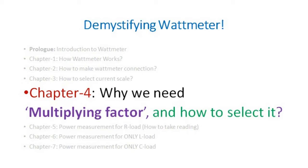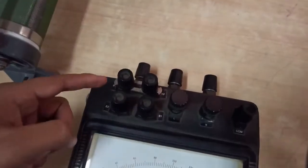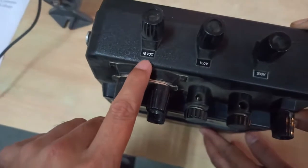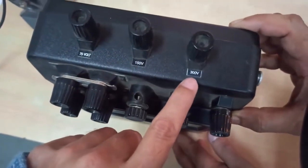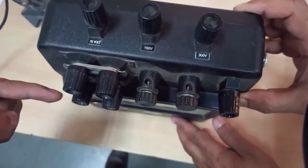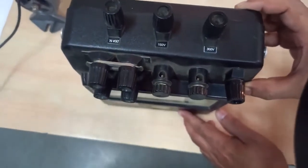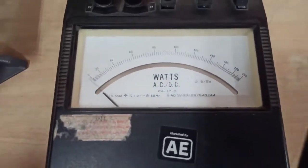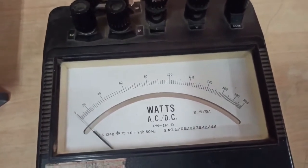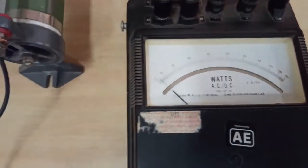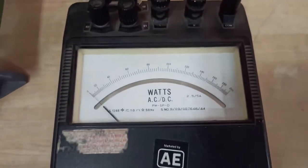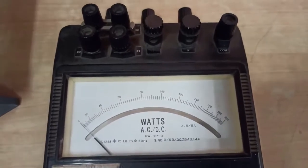For current, we have two scales, and for voltage, three scales: 75, 150, and 300 volts. Selecting one voltage range and one current range gives six possible combinations. If we made six separate scales, the display would be very cluttered, so we use a single scale and adjust readings using a multiplying factor. The multiplying factor is determined based on which voltage and current ranges are selected.